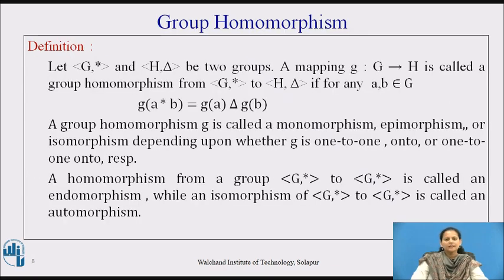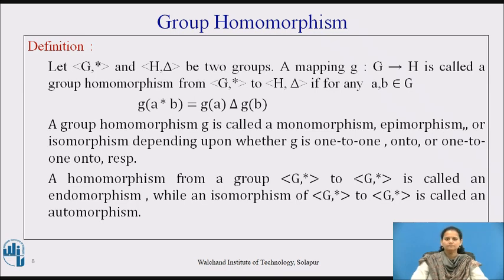Next, we define group homomorphism — a definition similar to what we have already learnt for semi-groups and monoids. Let G, star and H, delta be two groups. A mapping g from G to H is called a group homomorphism from G, star to H, delta if, for any a, b belonging to G, g(a star b) is equal to g(a) delta g(b). Similar is the definition for a semi-group homomorphism as well as a monoid homomorphism.